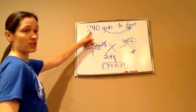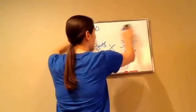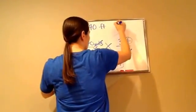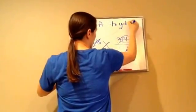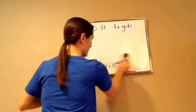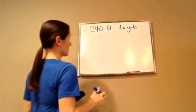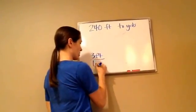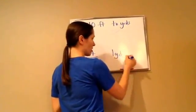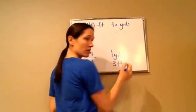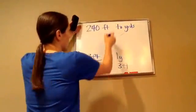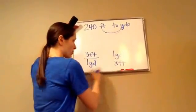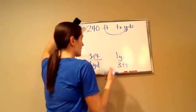What if it said 240 feet to yards? That's going to change some things. We still write down feet to yards: there are 3 feet in 1 yard, and there is 1 yard in 3 feet. This time I'm going from feet to yards — so which one am I going to use, the first one or the second one? The second one.